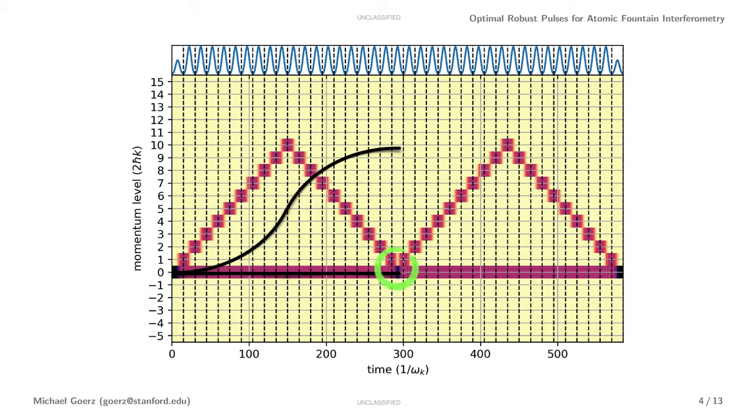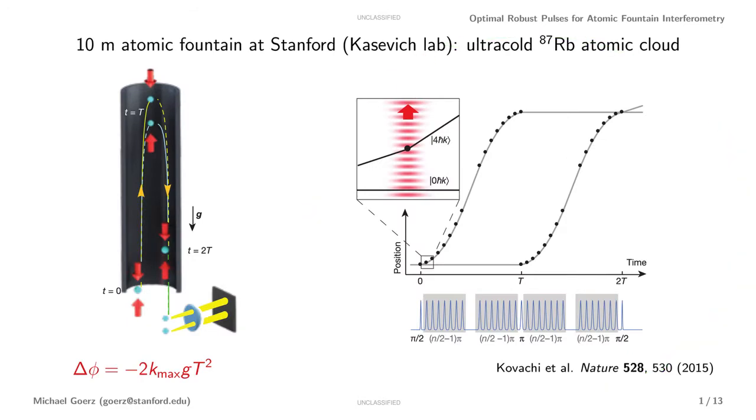The center pi pulse then swaps the trajectories and we do the same thing again, accelerating, and then decelerating, and finally recombining with a pi over 2 pulse. And this is exactly the same picture that you find in other publications.